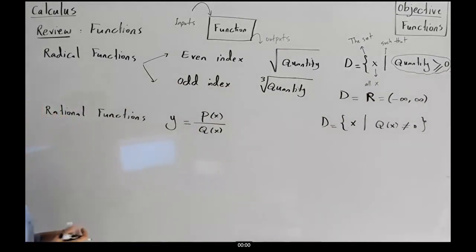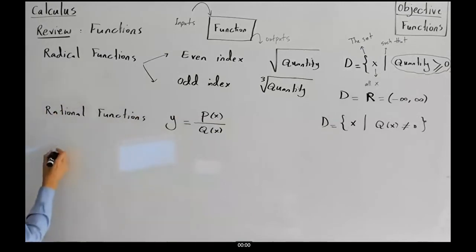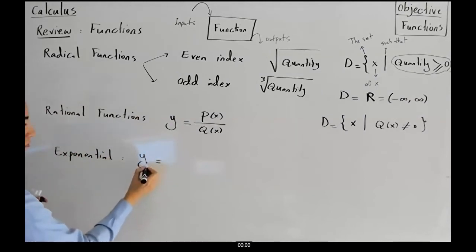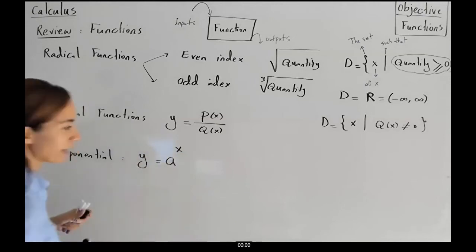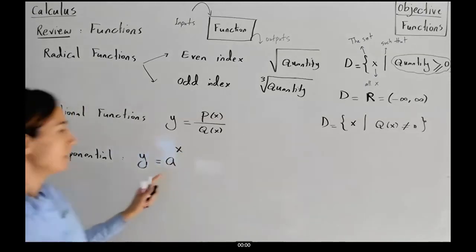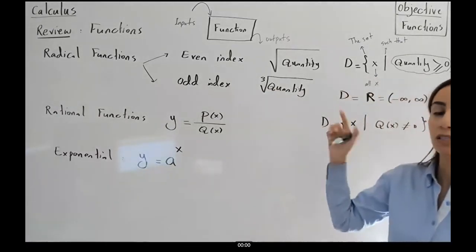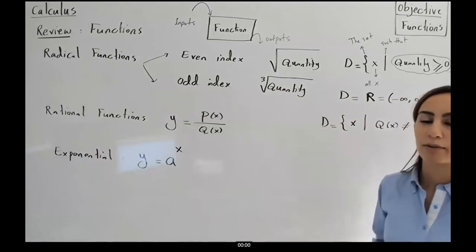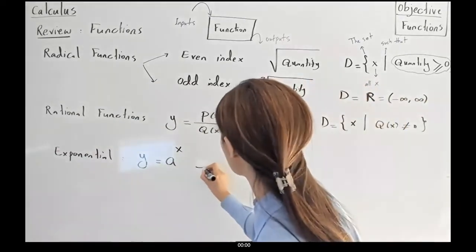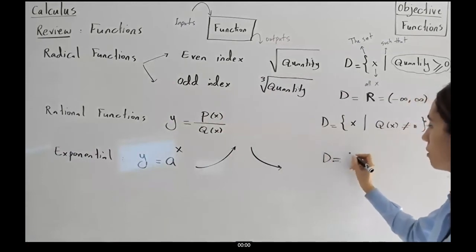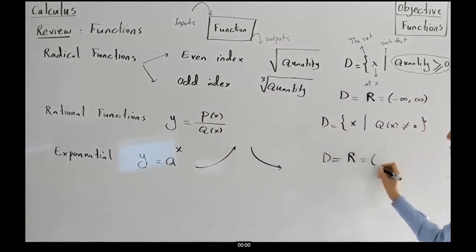Then we introduced exponential functions and their inverses, the logarithmic functions. An exponential function is Y equals to A to the power of X. Depending on A: if A is greater than one, you have an increasing graph; if A is between zero and one, you get a decreasing graph. The domain of these types of functions is R, from negative infinity to positive infinity.